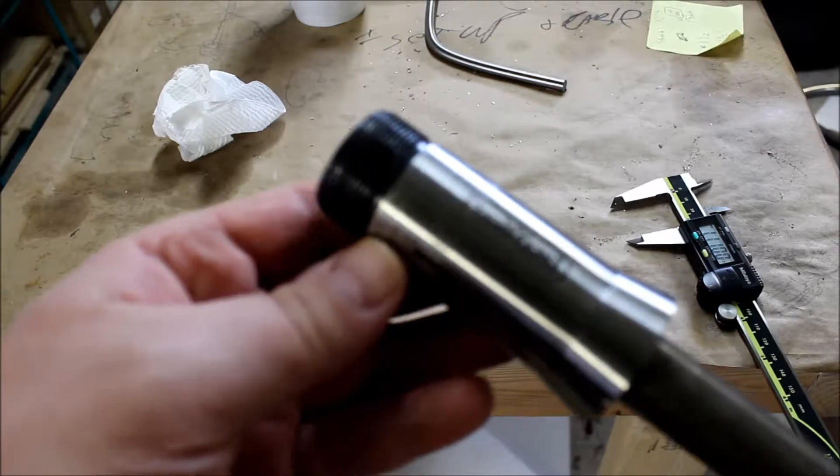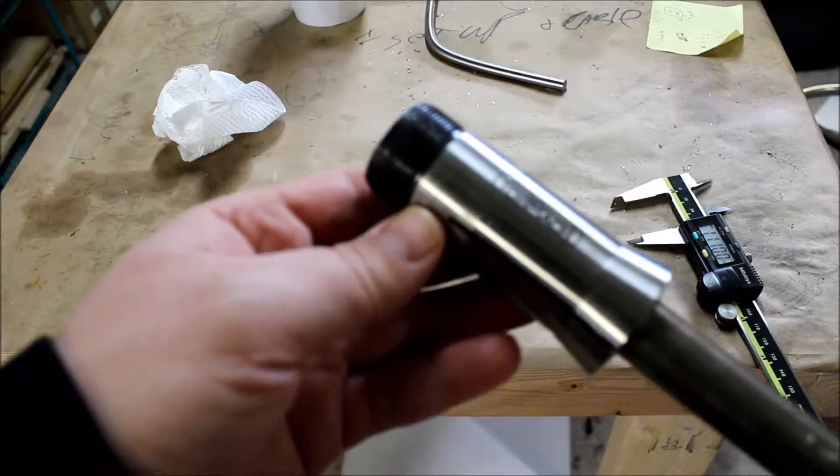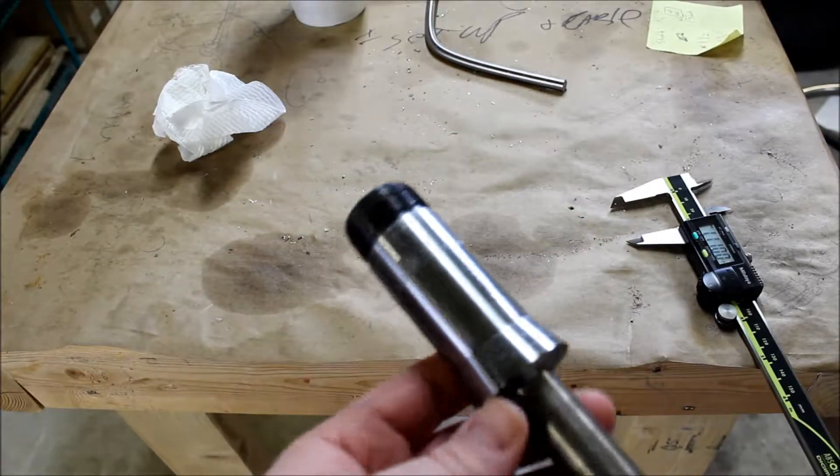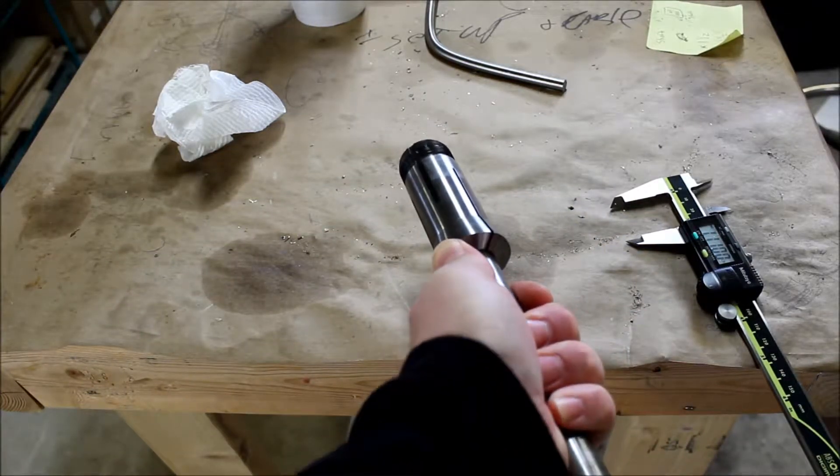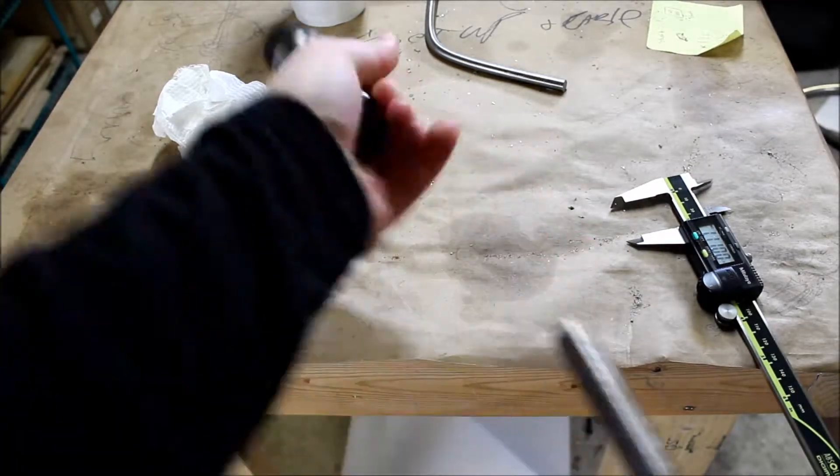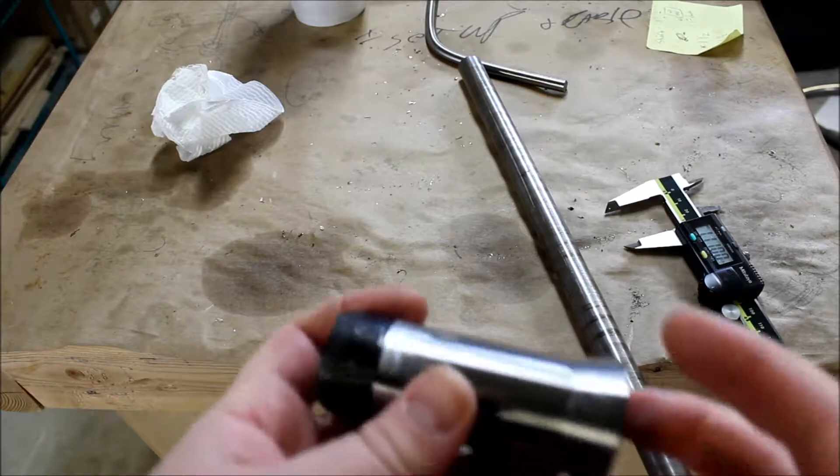So I'm sure Tormach doesn't make these collets himself, but if you look they've got them branded with their name on them. And if you're going to put your name on them and sell them as your own, you really should check the quality of them. So that's the main problem I'm having so far.